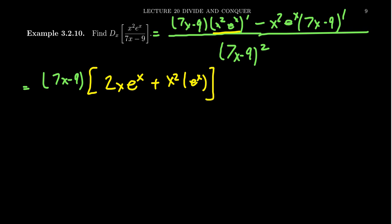So we can drop that down. We still have the minus x squared e to the x. And like I said a moment ago, when you take the derivative of the polynomial, of the linear function I should say, the derivative will just be its slope. So we get a 7 right there. This all sits above the 7x minus 9 squared.